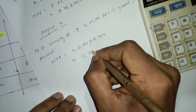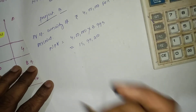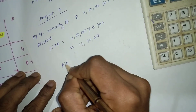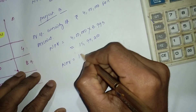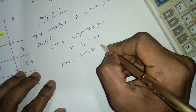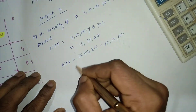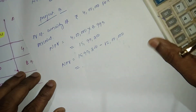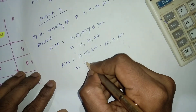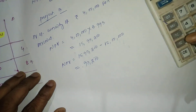Fifteen lakh ninety seven thousand two hundred minus initial cost of investment fifteen lakh. So NPV for Project B will be ninety seven thousand two hundred.